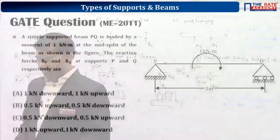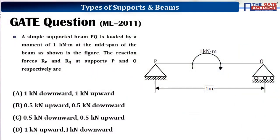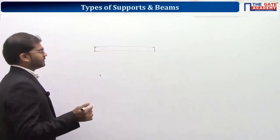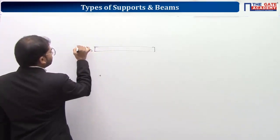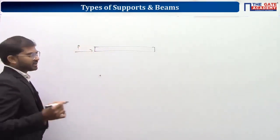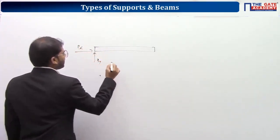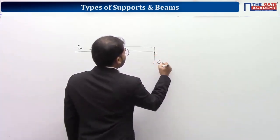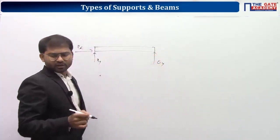Kindly copy the question. The correct answer is option A — a very simple question. The free body diagram: take out the beam and identify all applied forces and unknown forces. At the hinge support P, we have reaction forces Px and Py; at the roller support Q, we have only Qy. At the center there is a moment of 1 kN·m.